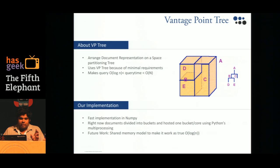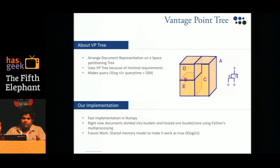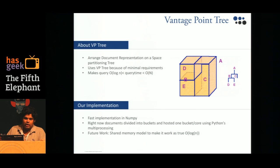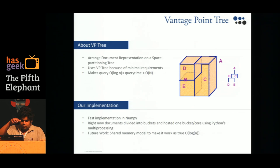Now that we have document vectors, we need to actually search for them. The traditional approach would have been to put up a Hadoop cluster, divide things into n parts, and query each separately. But since we weren't allowed to put a lot of resources into this, we decided to make a search structure instead.